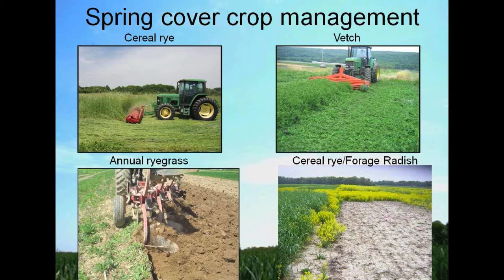In some cases, tillage is necessary to prepare the bed — such as with annual ryegrass. Or you could choose a cover crop that winter kills; in this case we have forage radish, which winter killed over winter and leaves a seedbed that is much closer to ready. You'd have to go in and harrow it and prepare it for seeding.